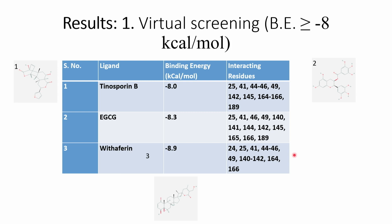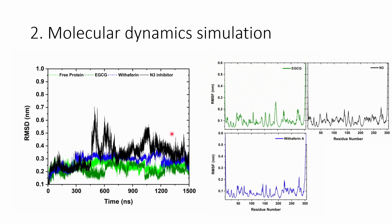Based on the virtual screening, we selected three natural compounds with binding energy greater than minus 8 kcal/mol: tenosporin B, EGCG, and withaferin A. We then focused on EGCG and withaferin. After docking, we performed MD simulation of the docked complexes to assess their stability in a realistic environment. A 1500 nanosecond MD simulation was run and we plotted RMSD versus time. Looking at the last 300 nanoseconds, the RMSD is quite low and stable for all three cases.